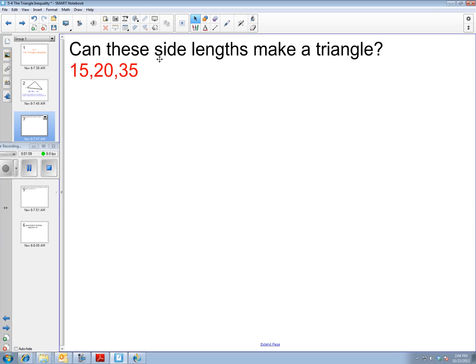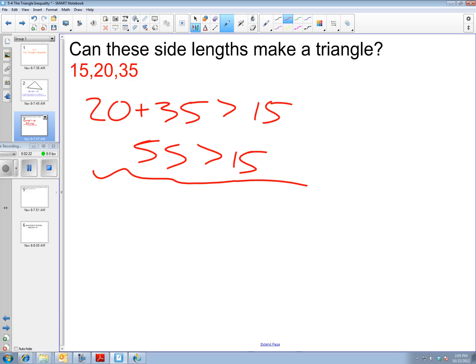Question. Can these side lengths make a triangle? The way we check that is, we test to see if any two sides would be shorter than the third. 20 plus 35. Is that bigger than 15? Well, 55 is definitely bigger than 15. Our first check works.